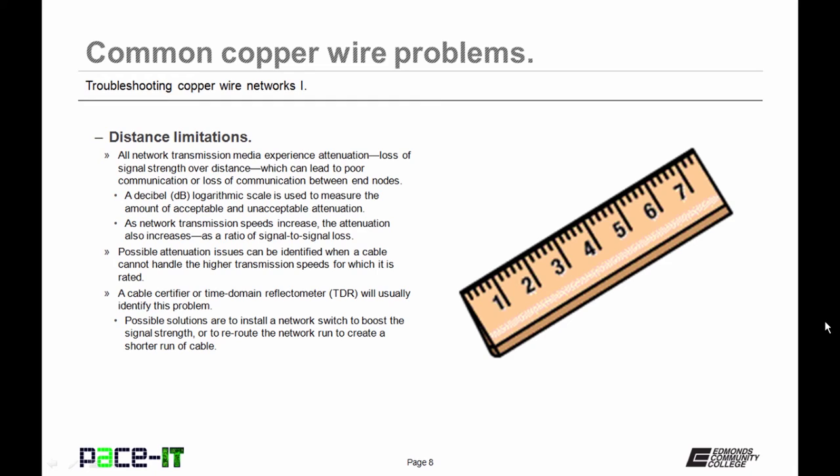All copper wire networks have distance limitations and by that all network transmission media experience attenuation, which is a loss of signal strength over distance. This can lead to poor communication or loss of communication between end nodes. A decibel logarithmic scale is used to measure the amount of acceptable and unacceptable attenuation. As network transmission speeds increase, the attenuation also increases as a ratio of signal to signal loss.